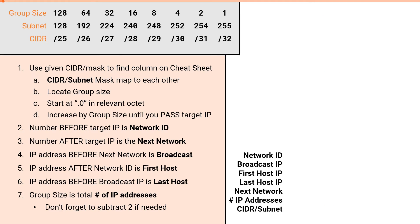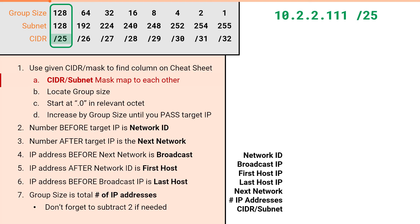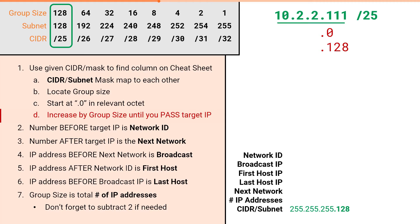Our next example problem is 10.2.2.111 slash 25. The CIDR of slash 25 puts us in this column. The subnet row in this column lists 128, which means our subnet mask is 255.255.255.128. For a slash 25, the group size is 128. We'll start at .0 and increment by 128 until we pass our target IP: .0, .128 — and in our first increment, we've already passed .111.